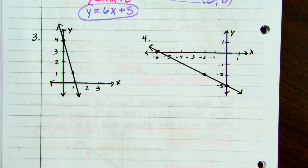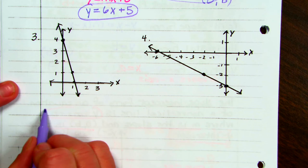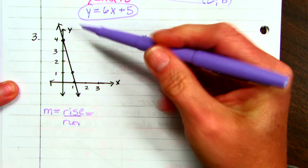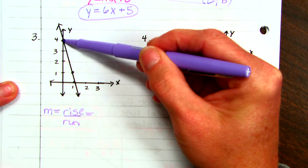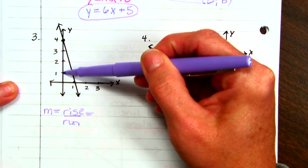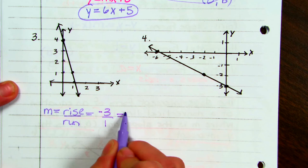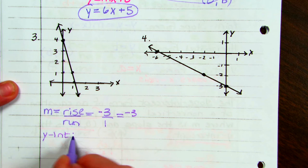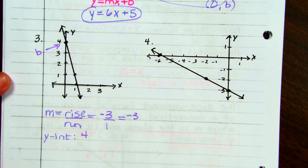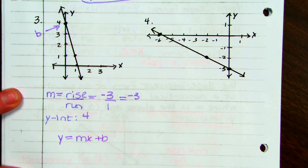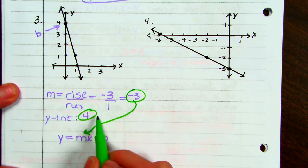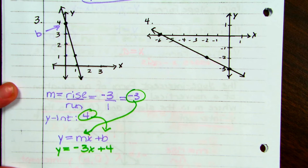Sometimes you're given a graph to write the equation of a line — they don't tell you the y-intercept or slope, you find them. First find the slope: reading left to right, from the leftmost point going to the next, go down 1, 2, 3 — down is negative — and to the right 1, which is positive. So the slope is negative 3 over 1, or negative 3. The y-intercept is crossing at 4, so b = 4. Using y = mx + b: y = −3x + 4.